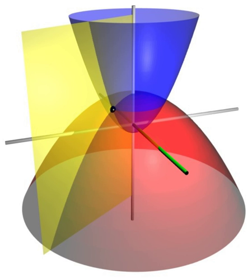Plucker coordinates are a way of representing lines in 3D Euclidean space using a six-tuple of numbers as homogeneous coordinates. Generalized coordinates are used in the Lagrangian treatment of mechanics. Canonical coordinates are used in the Hamiltonian treatment of mechanics. Barycentric coordinate system is used for ternary plots and more generally in the analysis of triangles. Trilinear coordinates are used in the context of triangles. There are ways of describing curves without coordinates, using intrinsic equations that use invariant quantities such as curvature and arc length. These include the Whewell equation, which relates arc length and the tangential angle, and the Cesaro equation, which relates arc length and curvature.